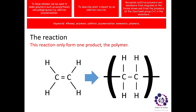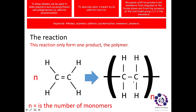Now, the only thing that's missing in this diagram is how many monomers were used to make this polymer chain. We represent this with the letter N. N refers to the number, so the number of monomers that are used to make this big, long polymer. For instance, this could be 50, which would mean that 50 monomers are used to produce a chain of 50 repeating units. So N is the number of monomers.